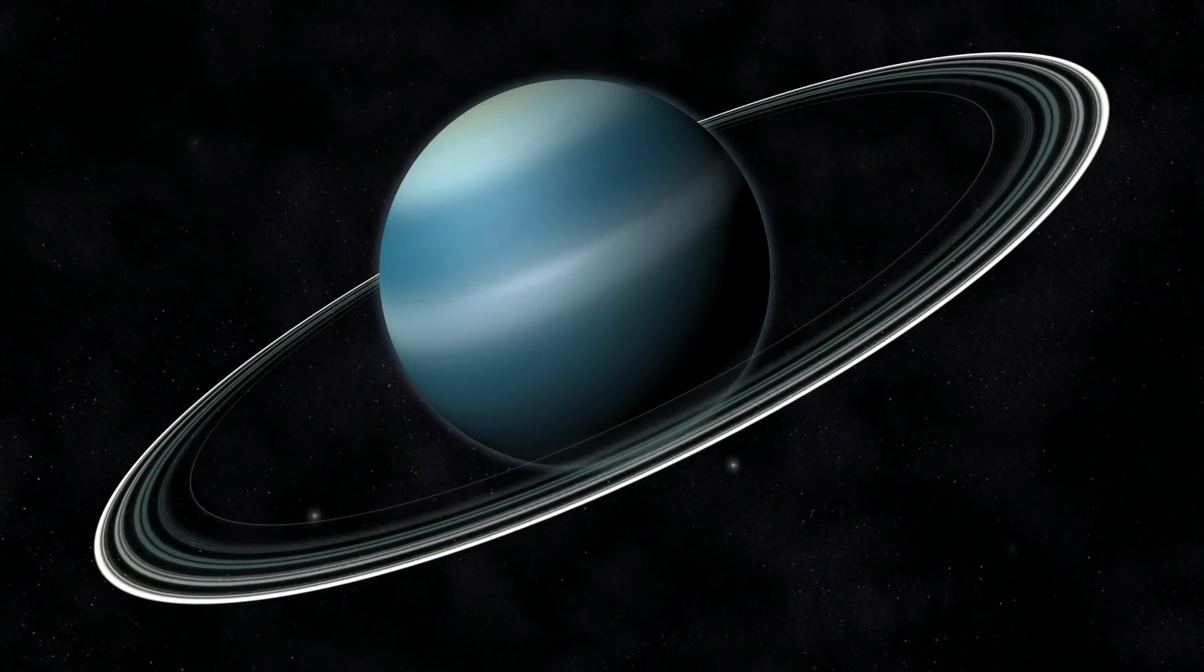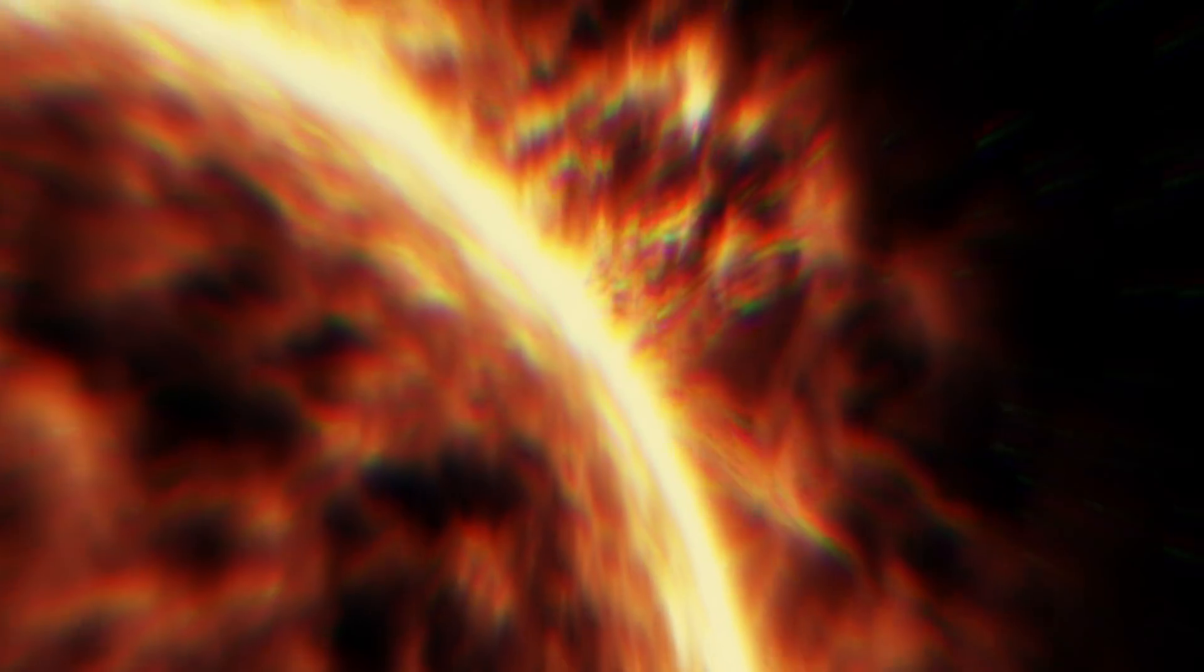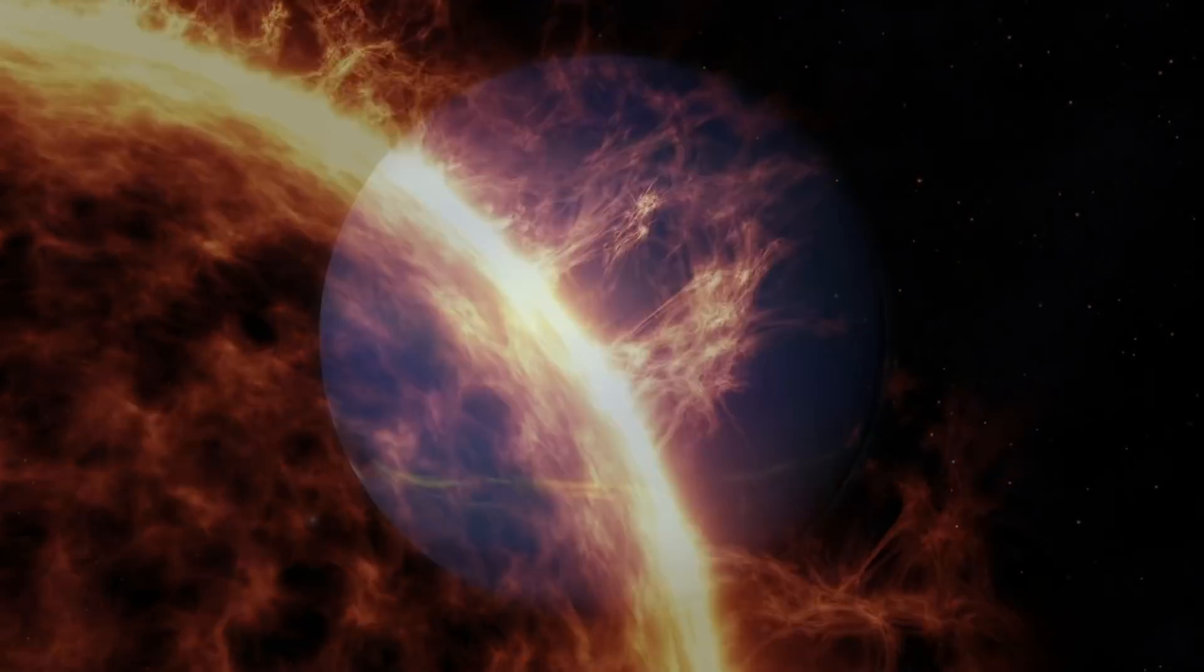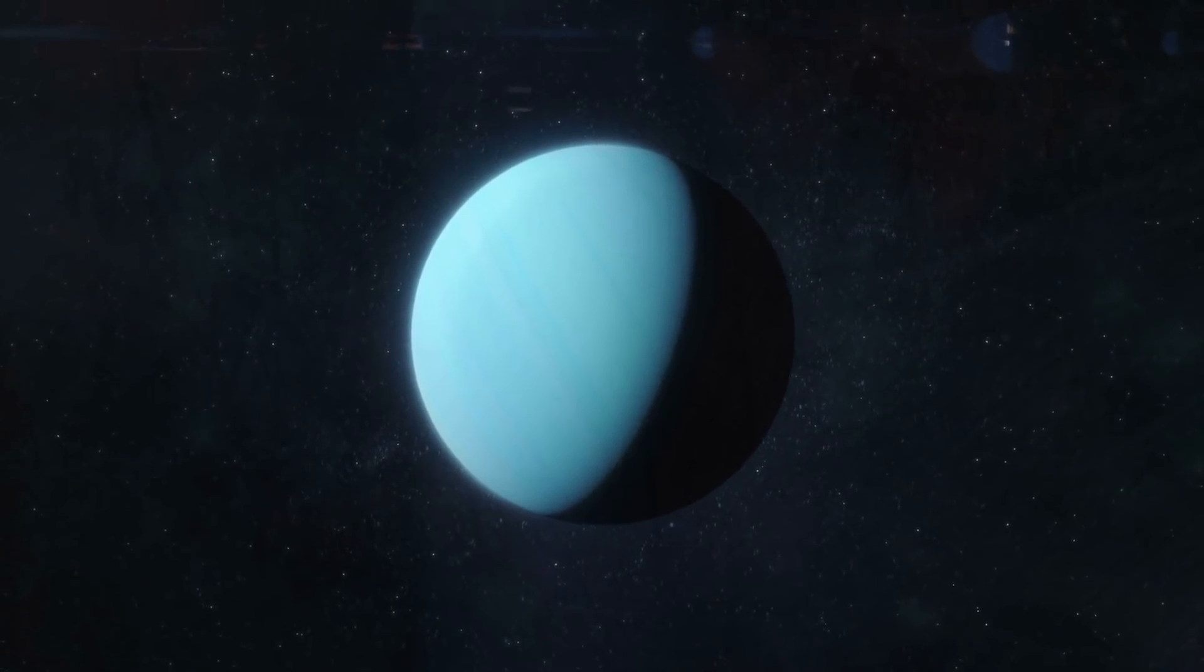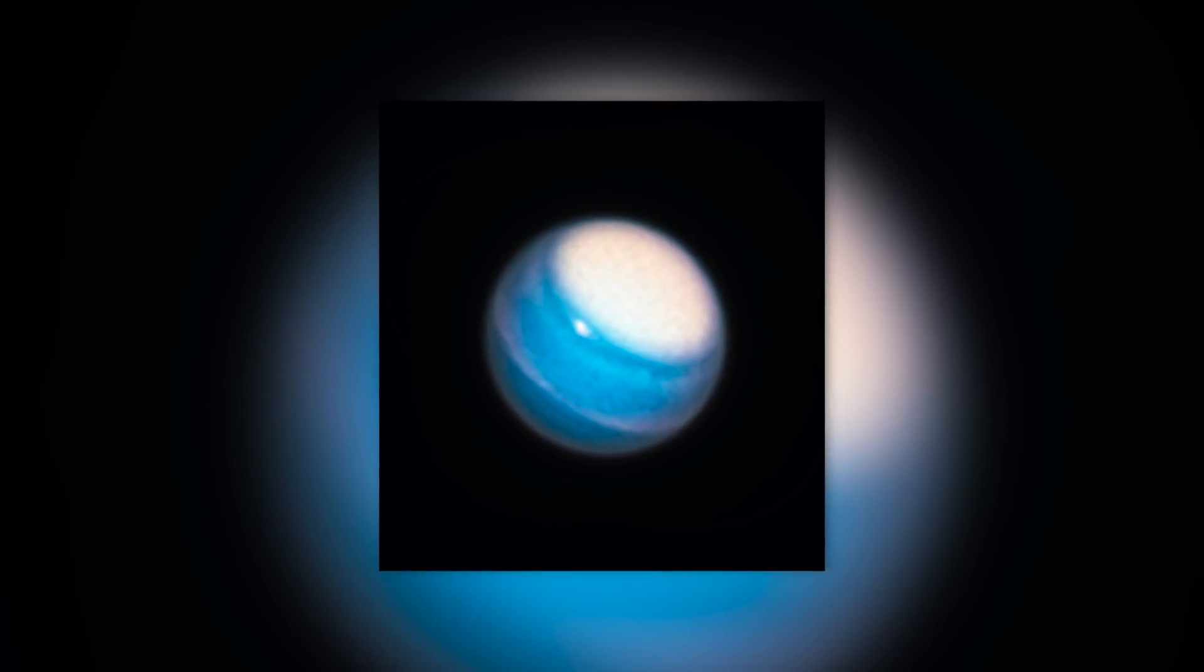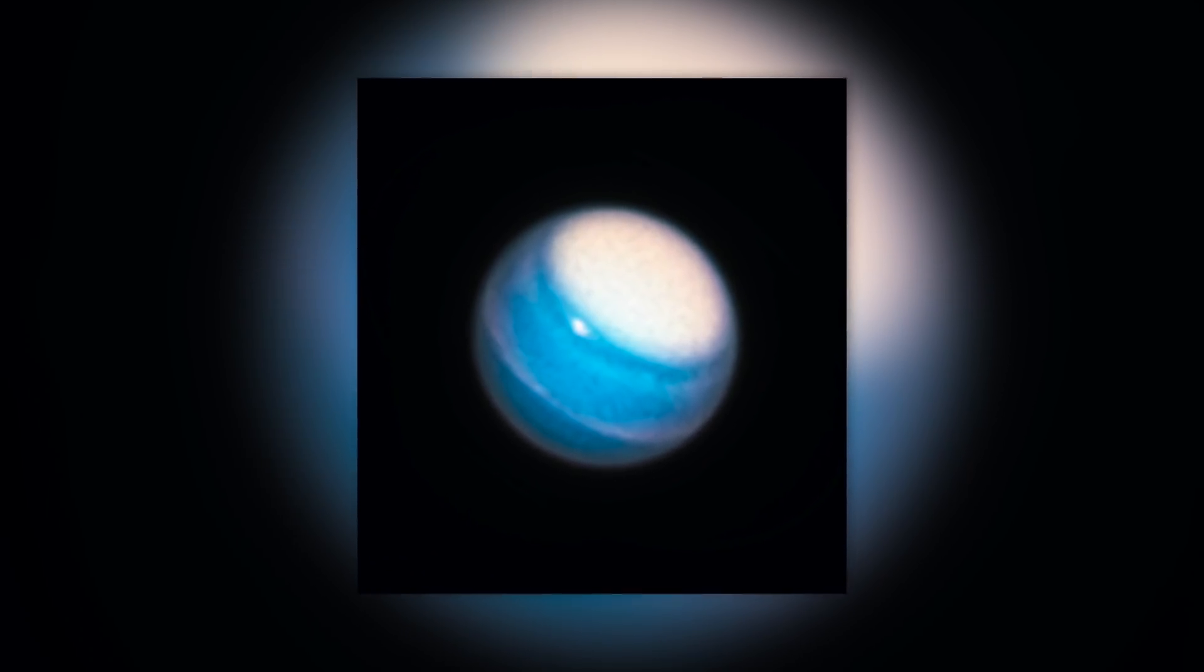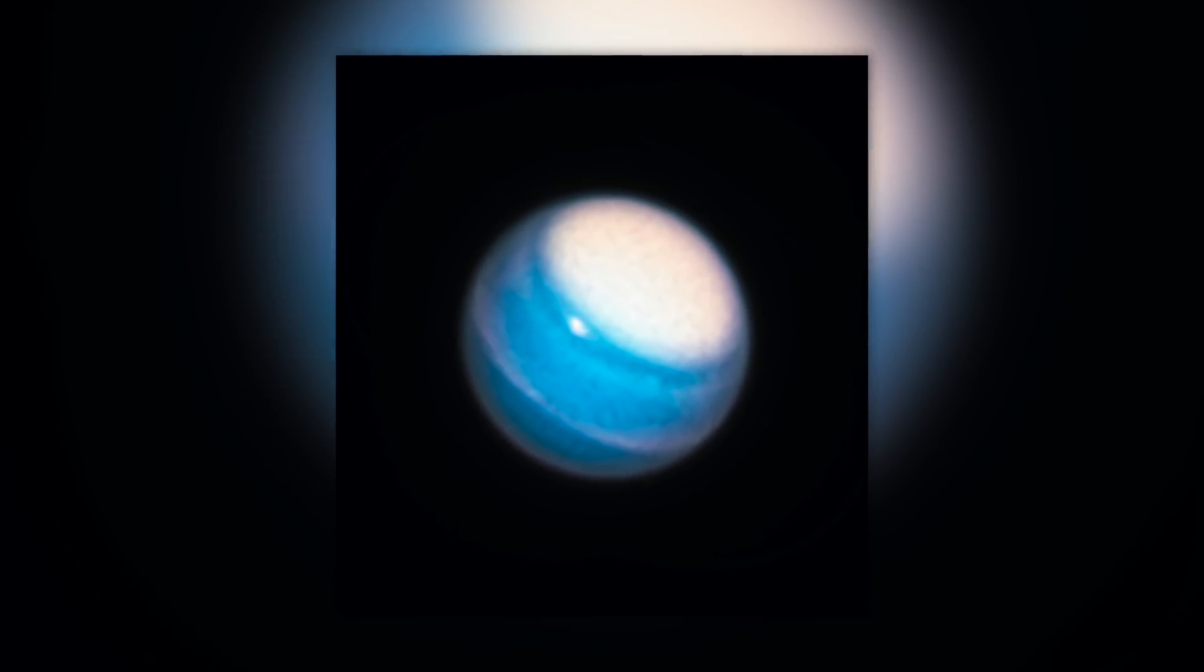Although Uranus, which orbits our galactic fixed star at a distance of about 1.8 billion miles, is much closer to the Sun than Neptune, it's still the coldest planet in our solar system. In fact, the thermometer in Uranus' atmosphere drops to as low as 371 degrees Fahrenheit below zero.